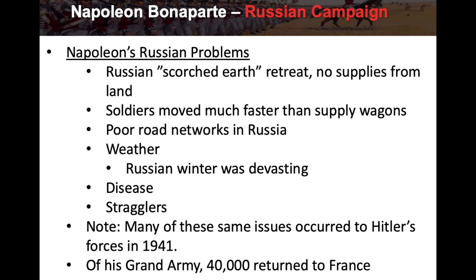Napoleon's Russian problems: number one, the Russian scorched earth retreat left no supplies from the land. Number two, the soldiers were moving much faster than their supply wagons — an army can only move as fast as its supplies, and outrunning them creates risk of the enemy cutting supply lines. There were also poor road networks, poor weather, the devastating Russian winter, disease, and stragglers. It's a lot of problems — they're really stretched out in Russia.